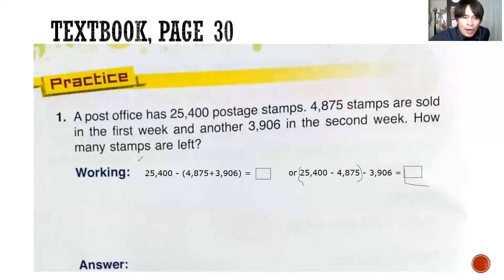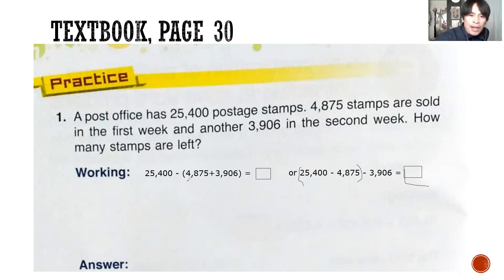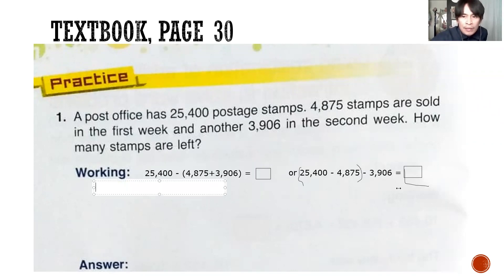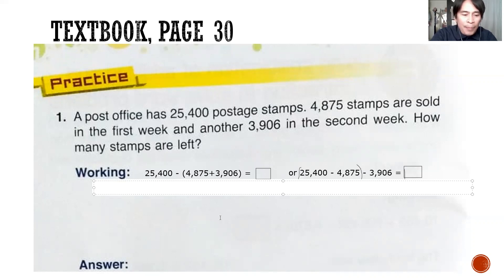If I'm going to choose this one, do not use the other one anymore — you have to pick one only. You need to describe 4,875. A post office — there are 25,400 stamps.